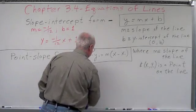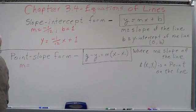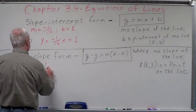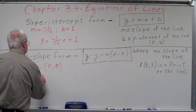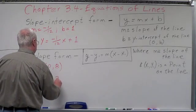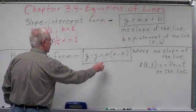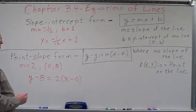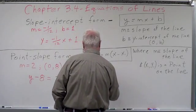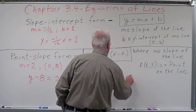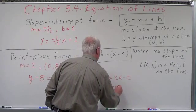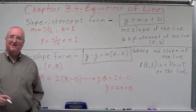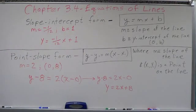Let's do another sample using the same point we used in slope-intercept — the point zero and eight with slope two. y — leave the y alone — minus eight, the y of the point, equals the slope, two, times x — leave the x alone — minus zero. This goes to y minus eight equals two x minus zero. Add eight to both sides: y equals two x plus eight. Compare that to what we got in slope-intercept form — it's the exact same equation, confirming that either form gives the same result when the point is the y-intercept.